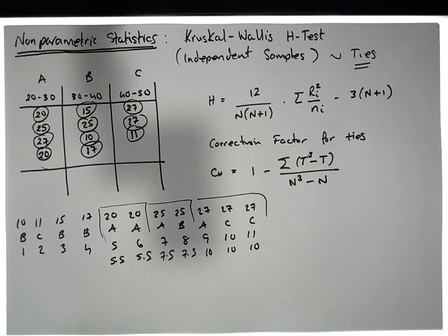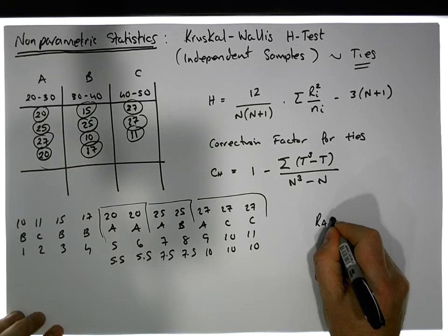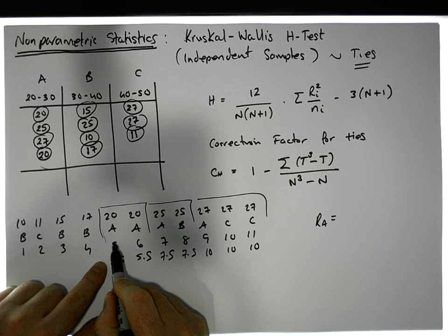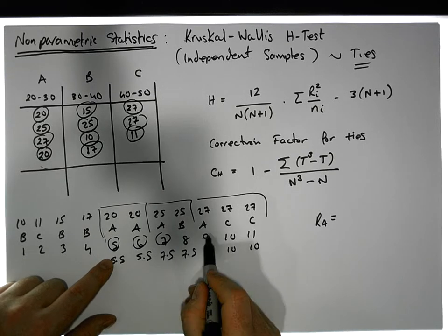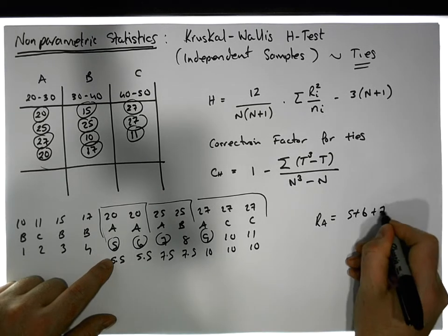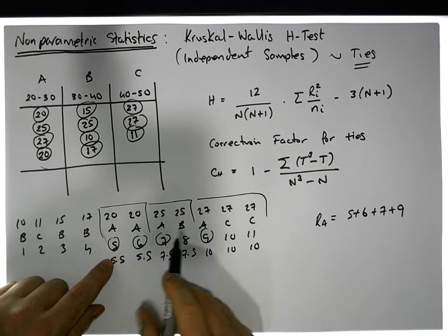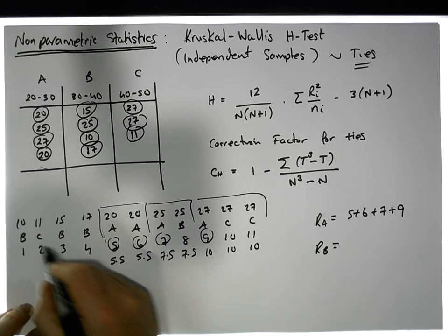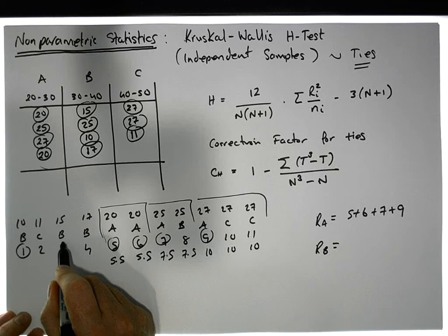Now we sum up the ranks for each group. The ranks for group A are 5.5, 5.5, 7.5, and 10. The ranks for group B begin with 1, 3, 4, and 7.5.